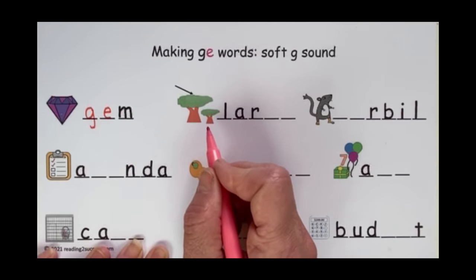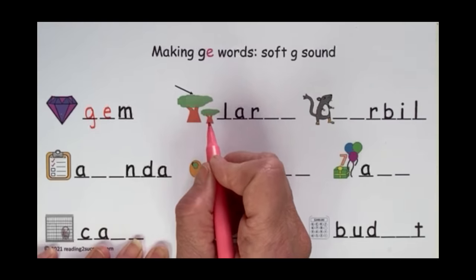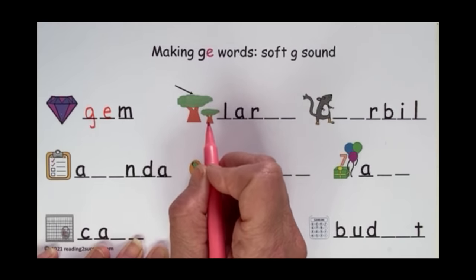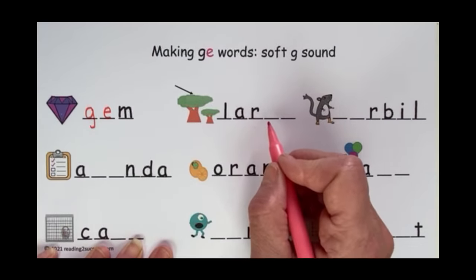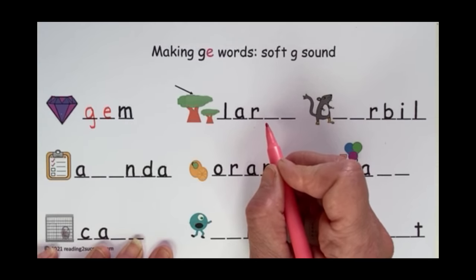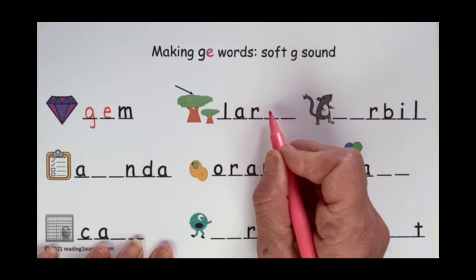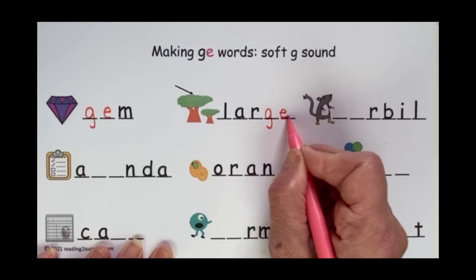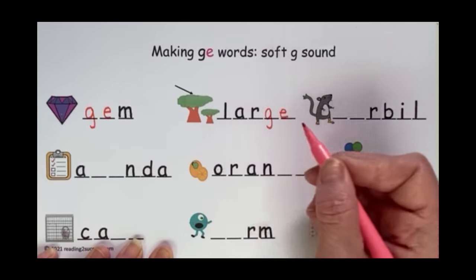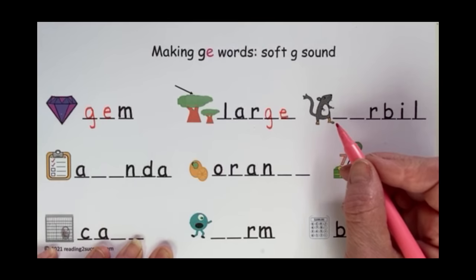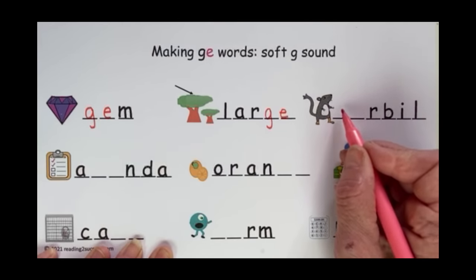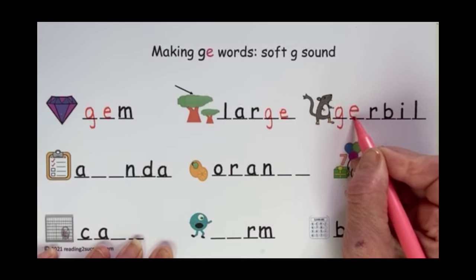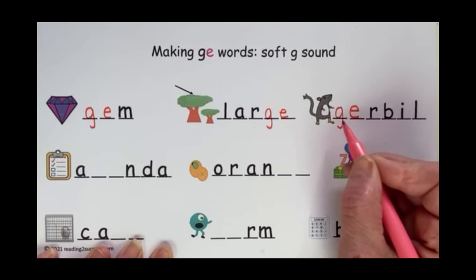Let's go across to this picture. We see two trees — this is a large tree compared to this tree. So our word is large. The soft G is here, so now let's write the letters that make that sound: G-E, large. This is a gerbil, so we're going to put in the two letters that make the soft G — G followed by an E — gerbil.